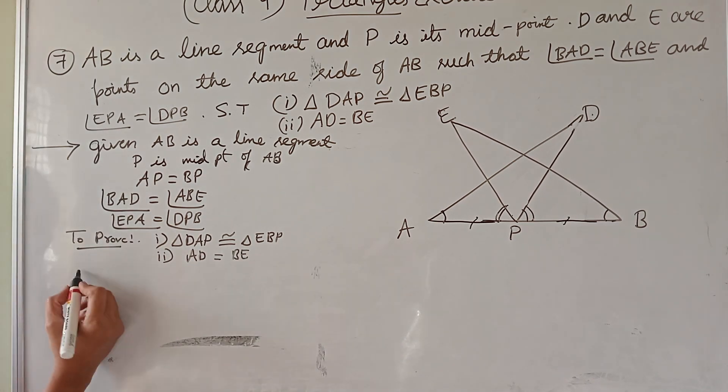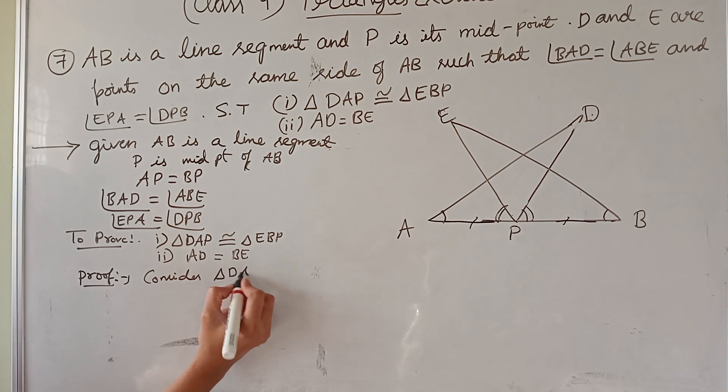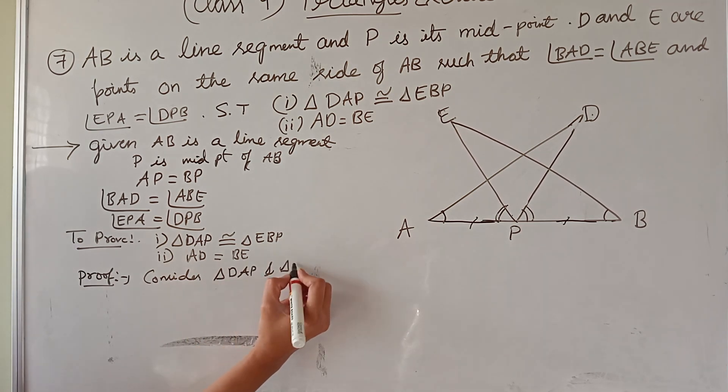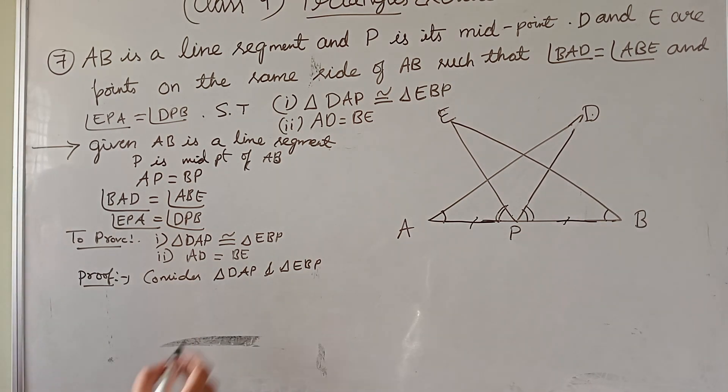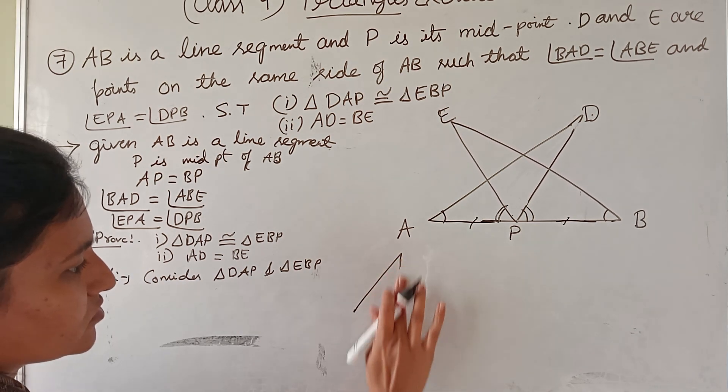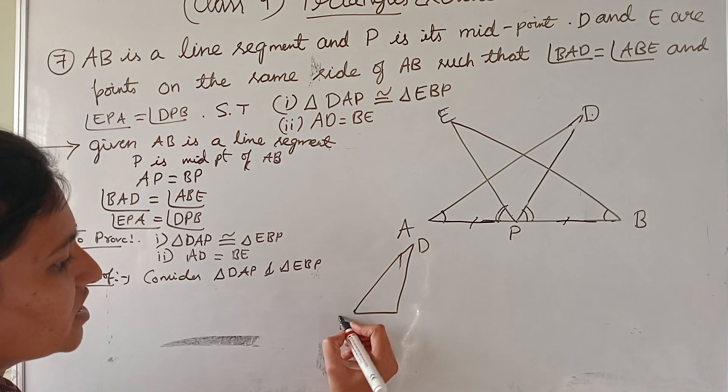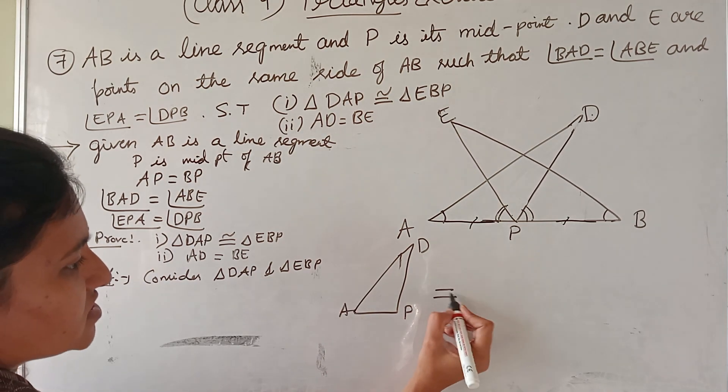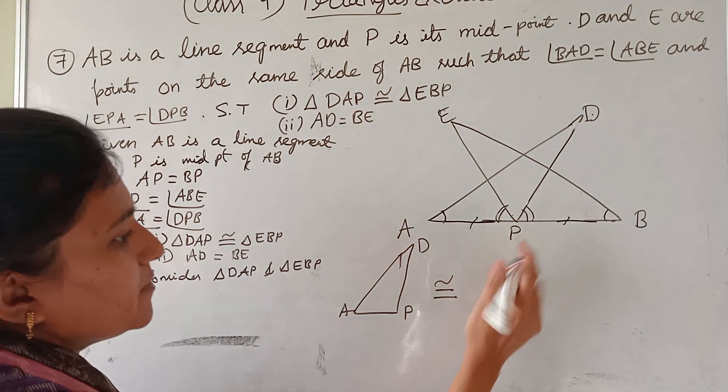In this one, I need to prove. For proof, I will consider these two triangles. Consider triangle DAP and triangle EBP. Let's write separately: DAP is congruent to EBP.